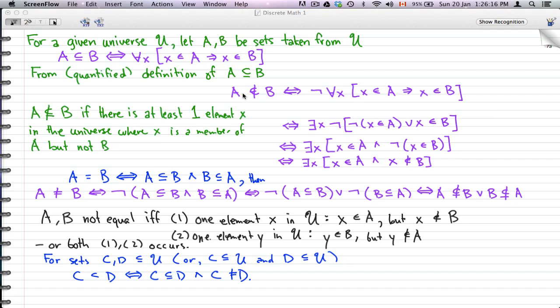Now in the last video we talked about subsets and sets, and this video we're going to continue on with that. So for a given universe U, we can let A, B be sets taken from U. So A is a subset of B.